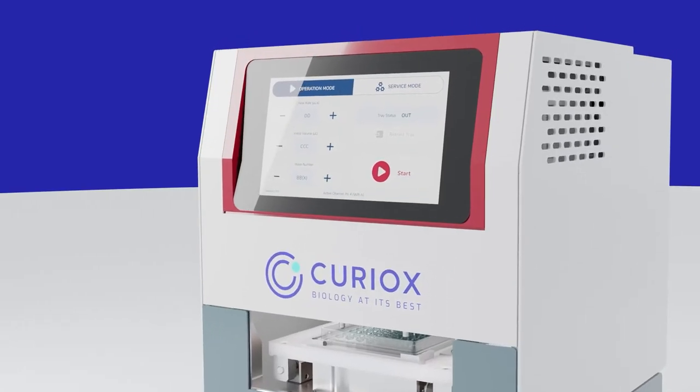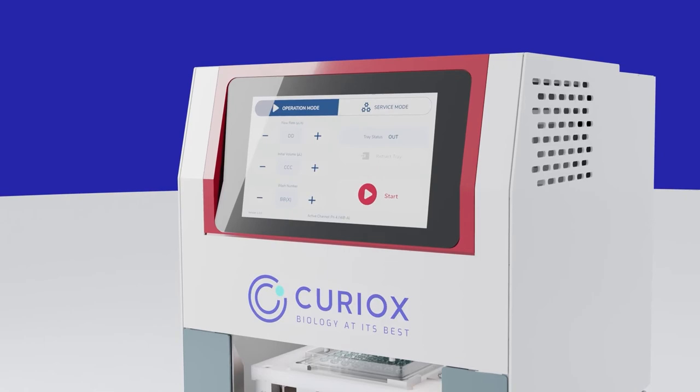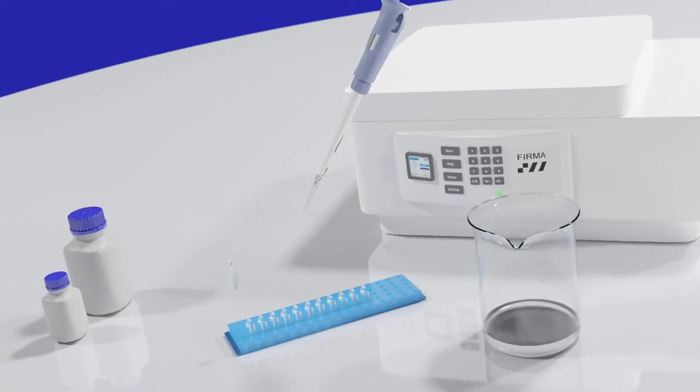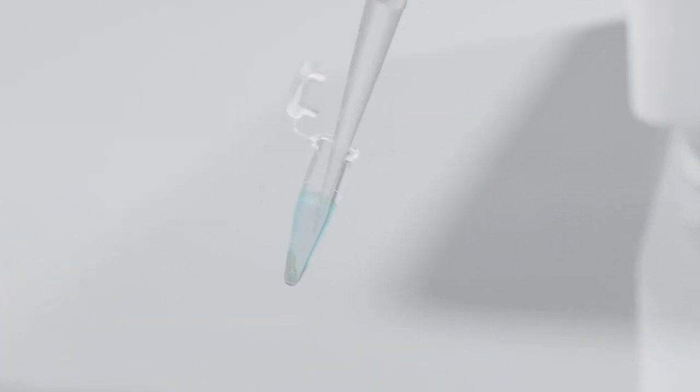All it takes is the press of a button on the laminar wash system, instead of the multiple manual steps associated with centrifugation, including spinning, sample aspiration, buffer dispensing, and resuspension, all repeated for every wash step.